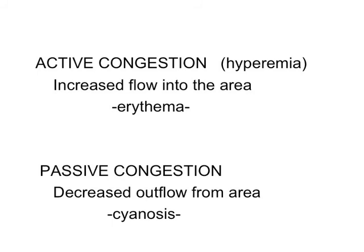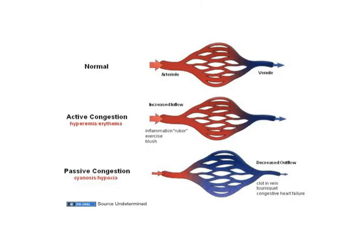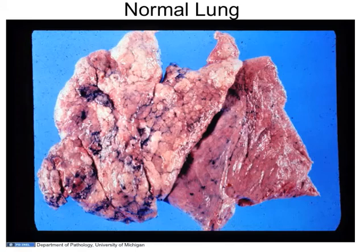You get a purplish color we sometimes call cyanosis — a bluing of the color. Whether it's active or passive congestion, if you look at the capillary bed the morphology is going to be the same: instead of seeing some capillaries empty, they're all going to be full and distended. In every cubic centimeter of tissue you're going to have more blood simply because of engorged vessels. Active congestion is an increase coming in on the arterial side; passive congestion is a decrease in outflow on the venous side.